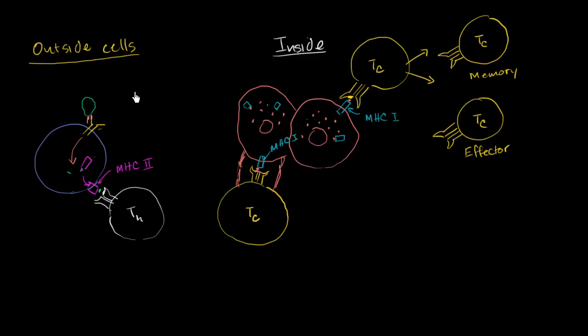It starts releasing all of these molecules. So it can release molecules like perforins, which will essentially cause gaps or holes to form in the membrane of the cell that needs to die. And then it can release other things like granzymes that can go in and essentially cause this thing to kill itself.